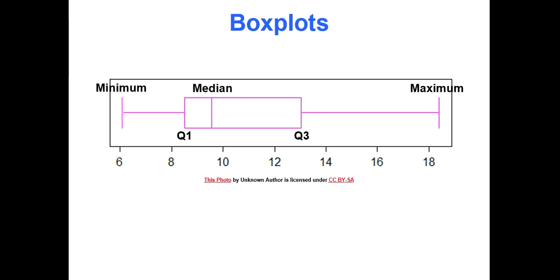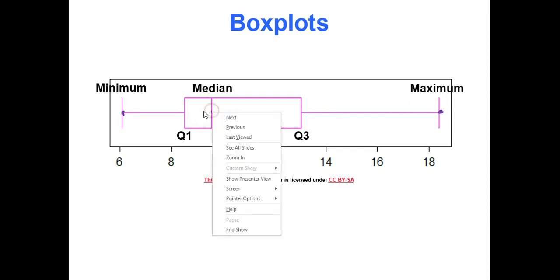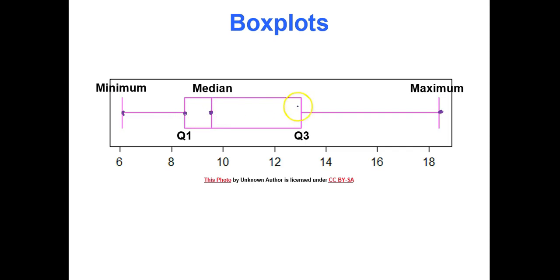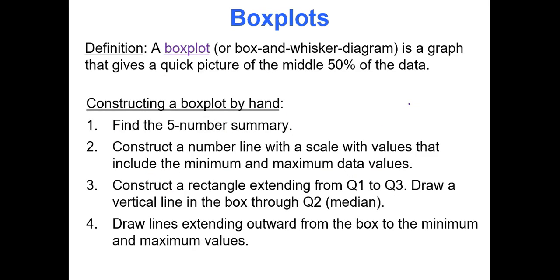The five number summary is used to make something called a box plot — some of you might know this as the box and whisker plot. You have a number line marked with numbers, your minimum data value, your maximum data value, your median, your first quartile, and your third quartile. A box plot gives you a quick picture of the middle 50% of the data.